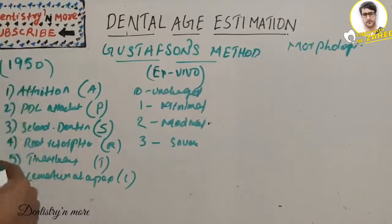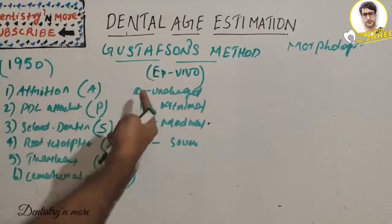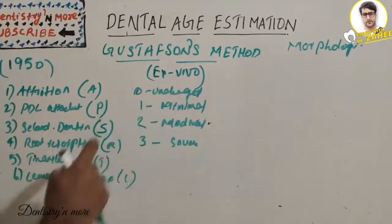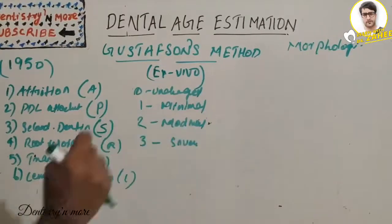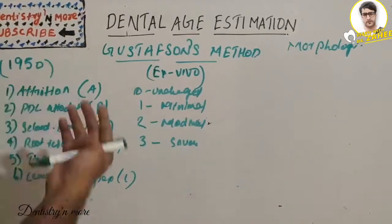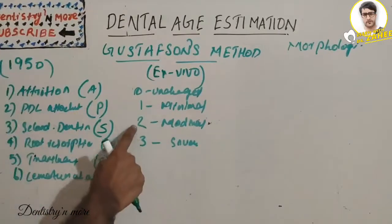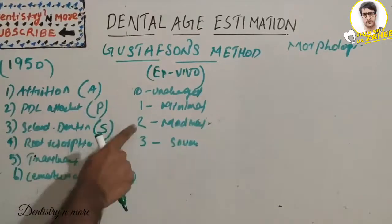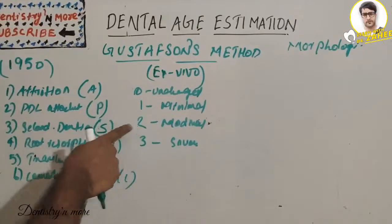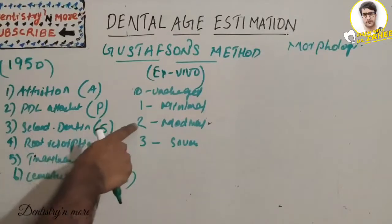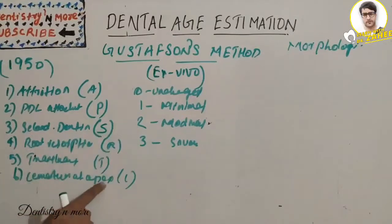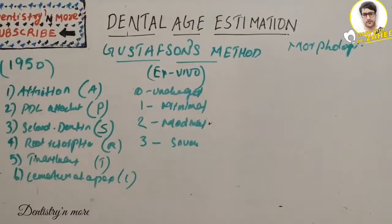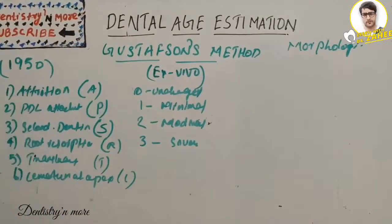For each of these regressive changes, we assign scores from zero to three. We need to check the tooth for each change and score it: zero means no change, one means minimal change, two means moderate change, and three means severe change. For example, if attrition is moderate, we give score two; if root resorption is moderate, we give two; if cementum at the apex is more, we give three.